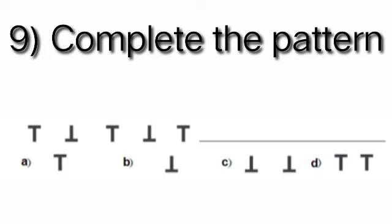Now, dear student, we can see the given options. Option A: T position is upward. Option B: T position is downward. Option C: double T, but position is downward. Option D: T position is upward. So we will put a tick on option B, which is our correct answer.